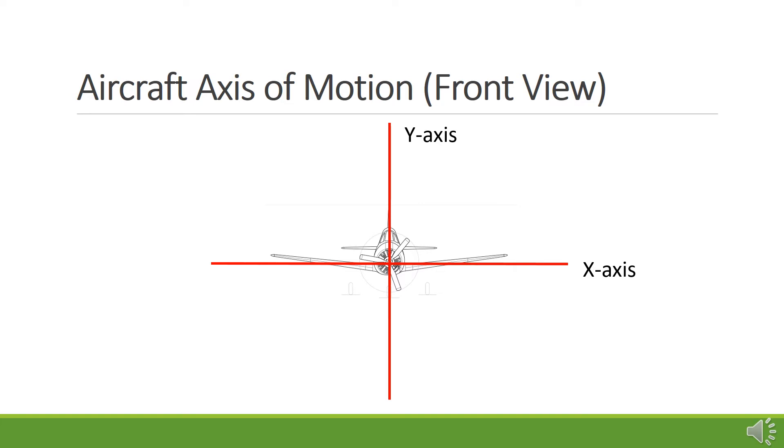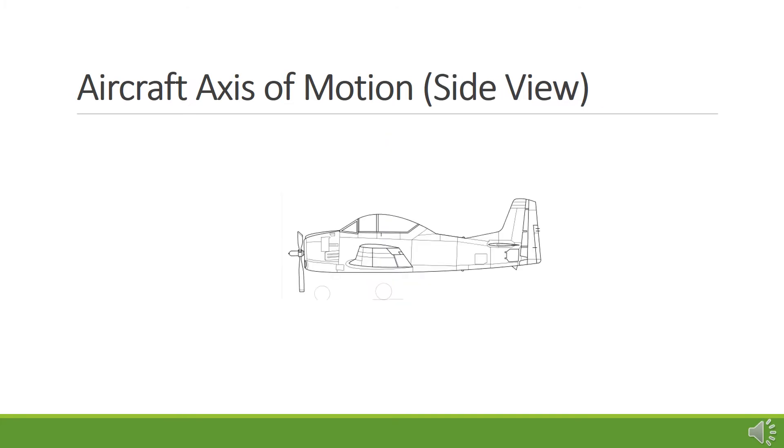Looking at the aircraft from the side view, the Y axis would again run vertically through the cockpit, while the Z axis would run from the nose to the tail of the aircraft. Now the X axis would point out of the slide.